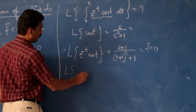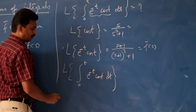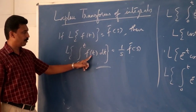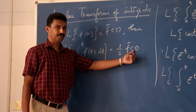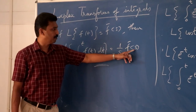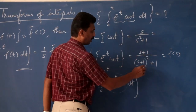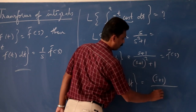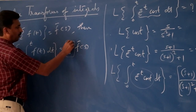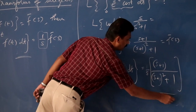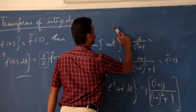So the Laplace transform of the integral from 0 to t of e^(−t)·cos t dt is (1/s) times the Laplace transform of e^(−t)·cos t, which gives (s + 1) divided by s·[(s+1)² + 1]. That is the answer. Next question.